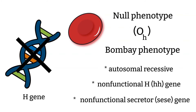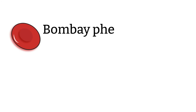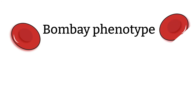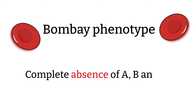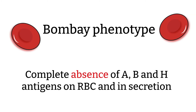Let me try to say it another way. Null phenotype people do not have fucosyltransferase to make the H antigen. The A and B enzymes cannot add A or B sugar because there is no precursor to start with. This happens to both type 1 and type 2 chains, so it results in a complete absence of A, B, and H antigen on the surface of RBCs and in secretions.